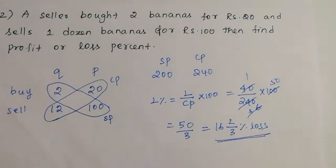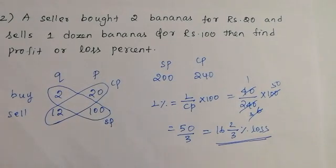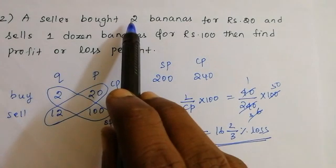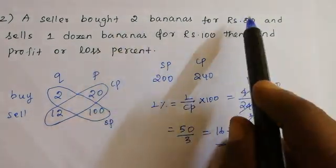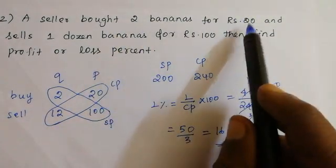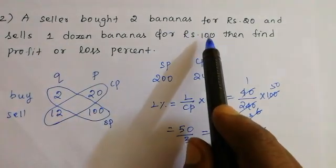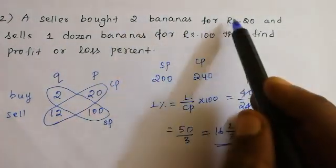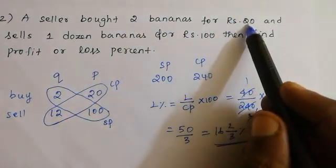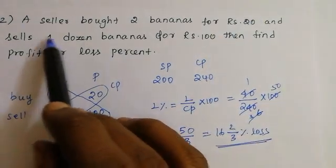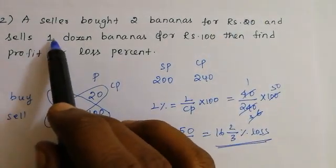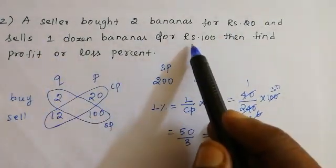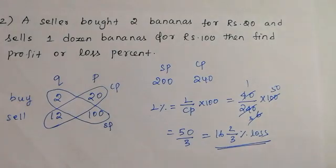So the answer is 16⅔% loss. This is the first model. The first model is: how high the amount is — the amount is given. We will ask the second model, we will ask the amount.